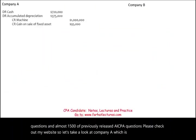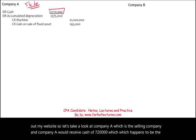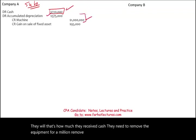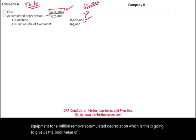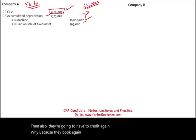Company A, the selling company — which happens to be the sub — received cash of $720,000. They need to remove the equipment for $1,000,000 and remove accumulated depreciation, which gives us the book value of $625,000. They also credit a gain because they booked a gain on the sale. When we prepare the consolidated statements for Company A and Company B, we cannot have that gain.